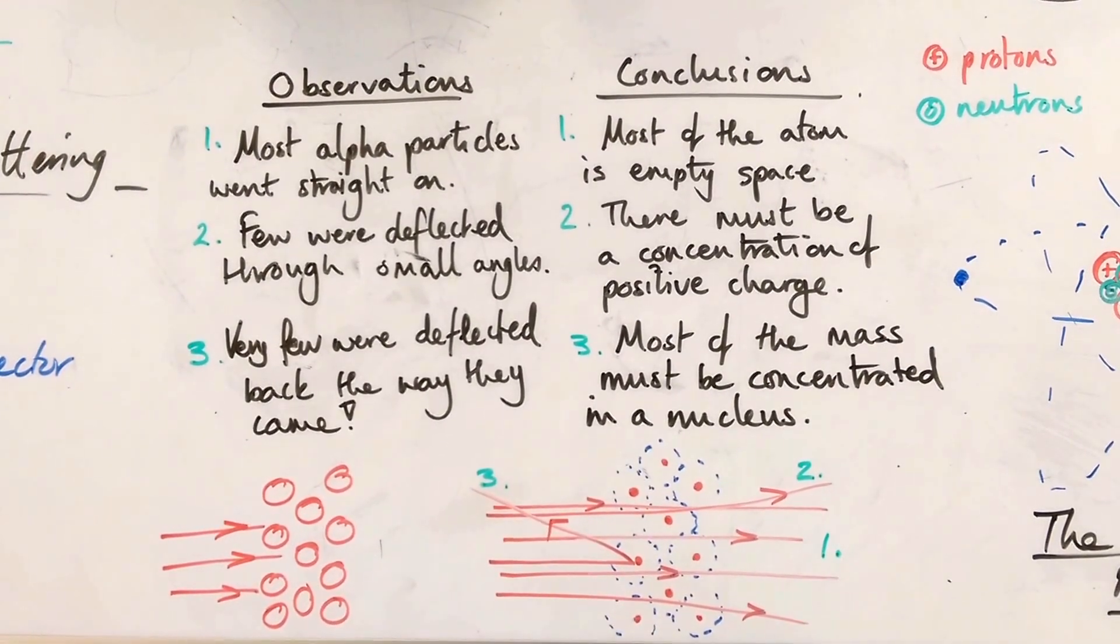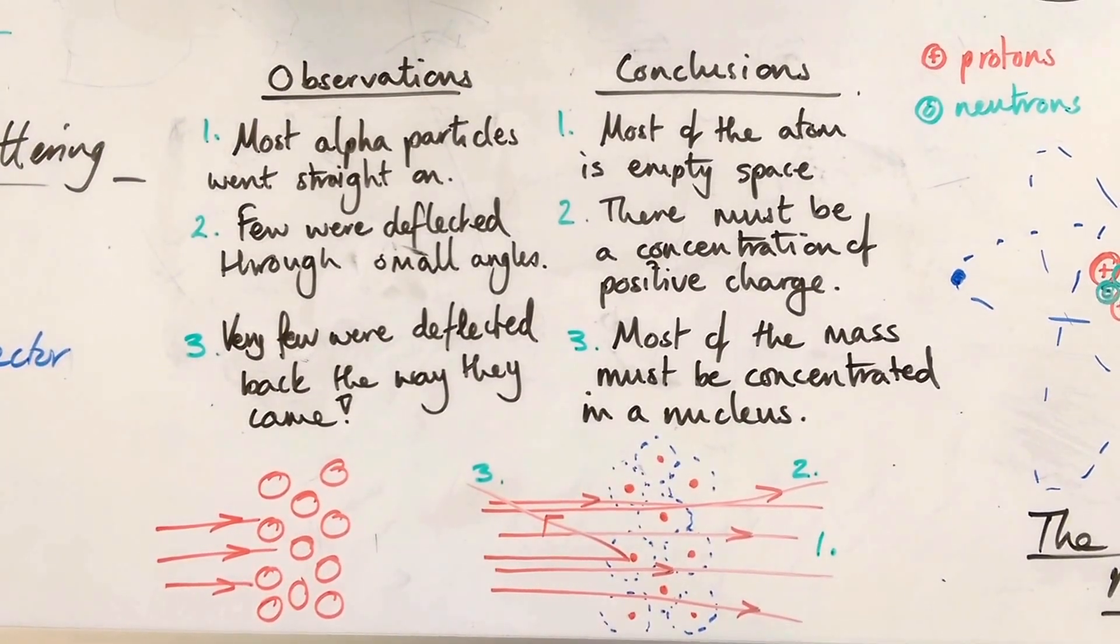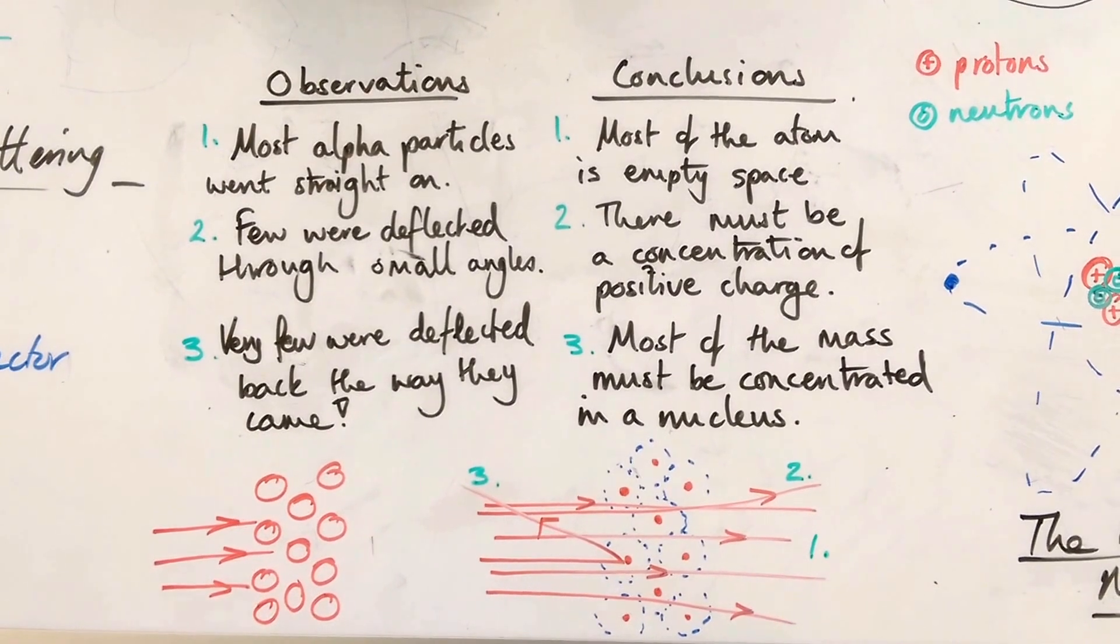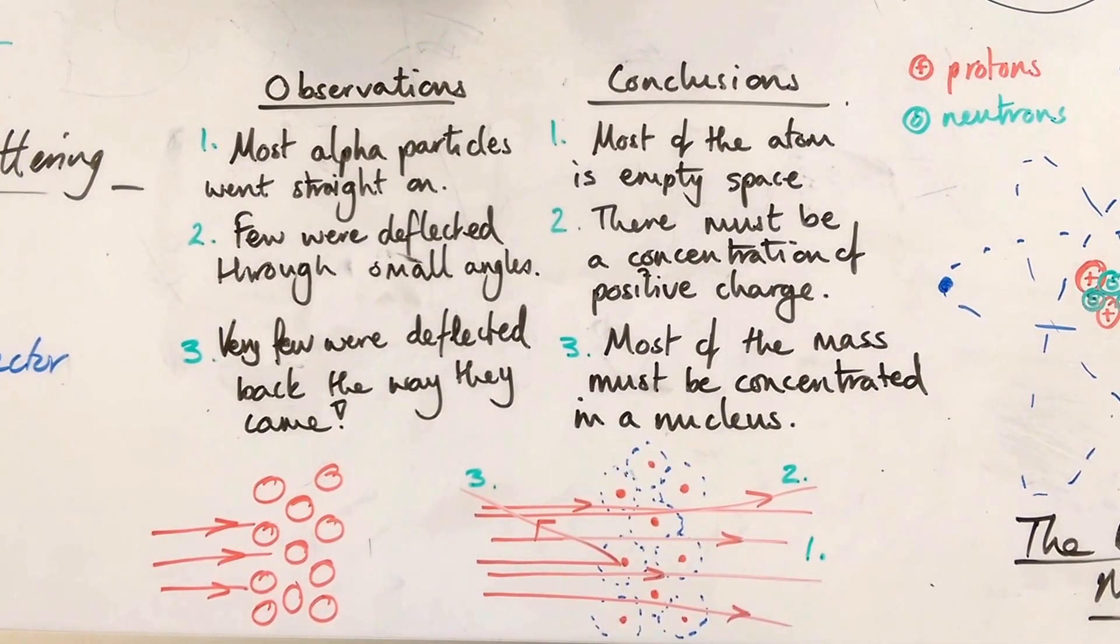First observation, most of the alpha particles go straight on. And the conclusion which is linked with that is that most of the atom must be empty space. Most of the atom is nothing at all.